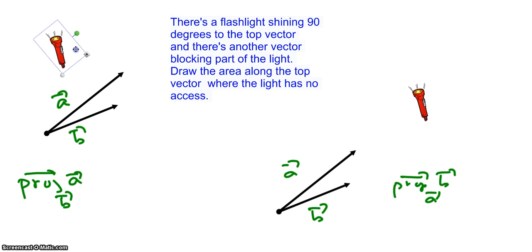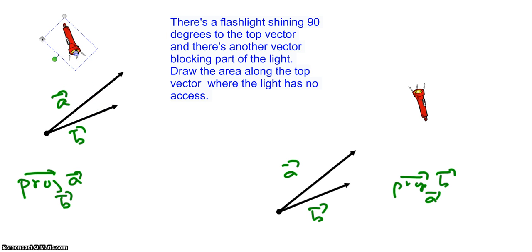Imagine a light shining down perpendicular to B. The A vector is in the way. We color the direction where the light is not exposed — anything underneath A is not exposed. But since the A vector is longer than the B vector, even if you extend it, this part is also not exposed to the light. So the projection vector is slightly longer than B, but still collinear to B.